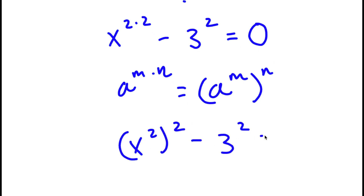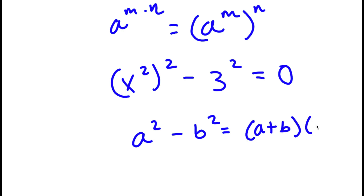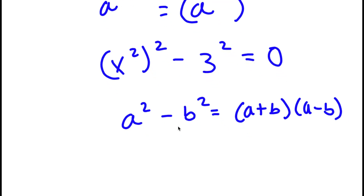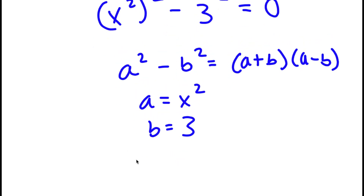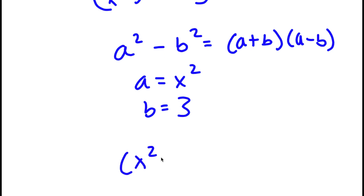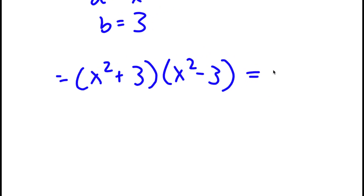Now I have x squared to the power of 2 minus 3 squared, equal to 0. If I have something in the form a squared minus b squared, this is equal to a plus b times a minus b. So a is x squared and b is 3, giving me x squared plus 3, times x squared minus 3, equal to 0.